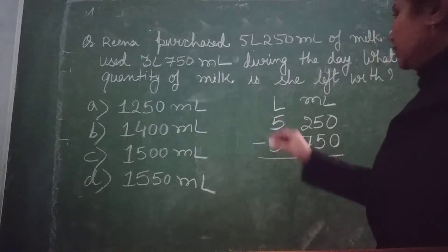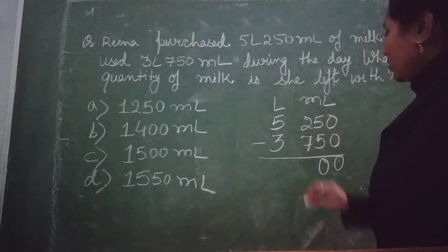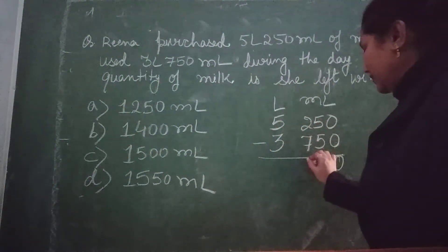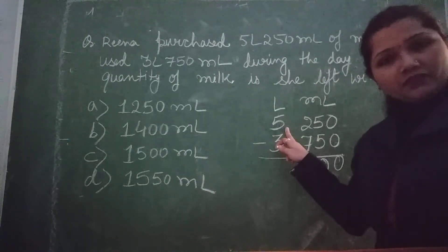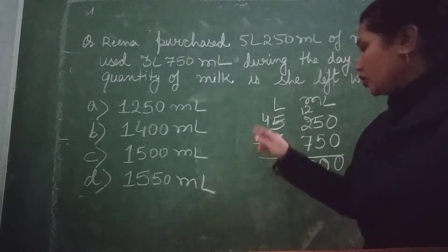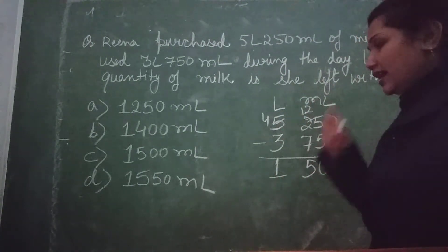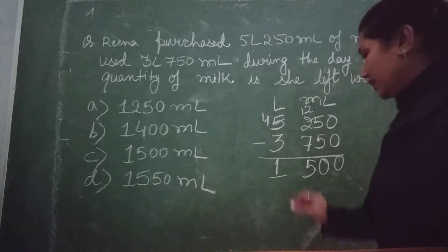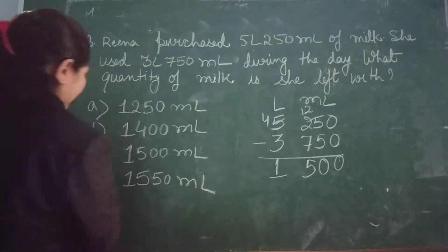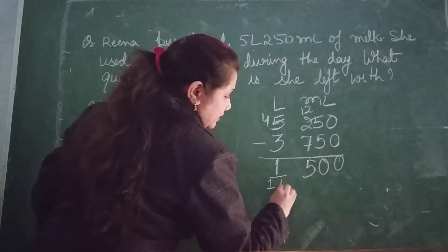So let's subtract. The total quantity is 5 litre 250 ml, and the used quantity is 3 litre 750 ml. In the ml column, 250 minus 750 requires borrowing — after taking a borrow from 5, we get 1250 minus 750. So 12 minus 7 is 5, giving 500 ml. The litre column becomes 4 minus 3 equals 1 litre. So the answer is 1 litre 500 ml, and option C will be the correct answer — that is 1500 ml.